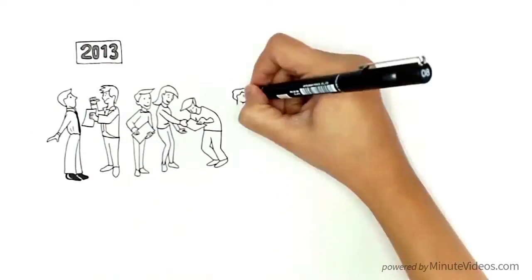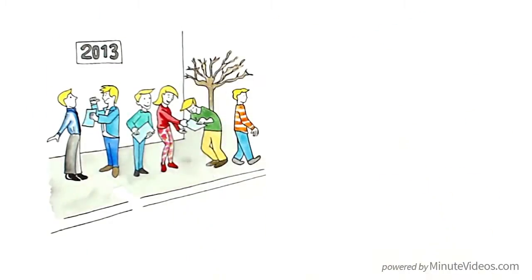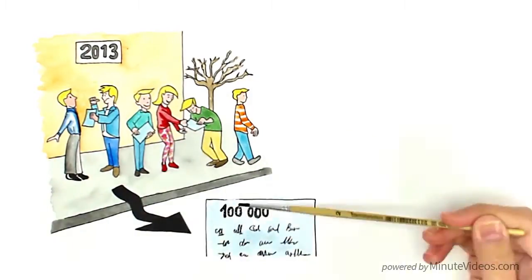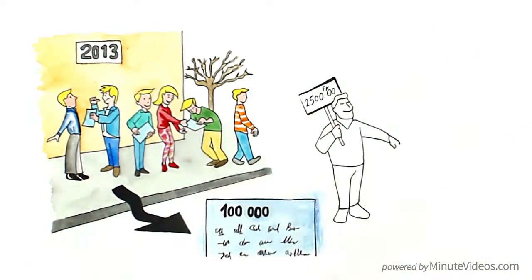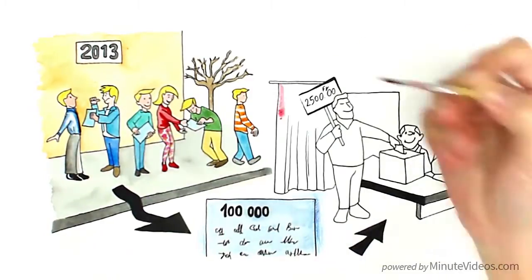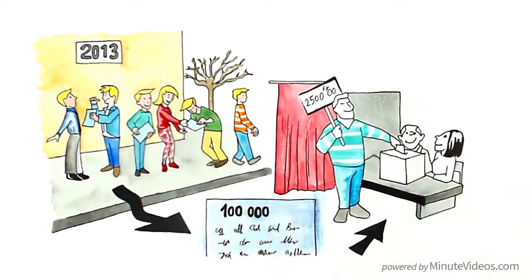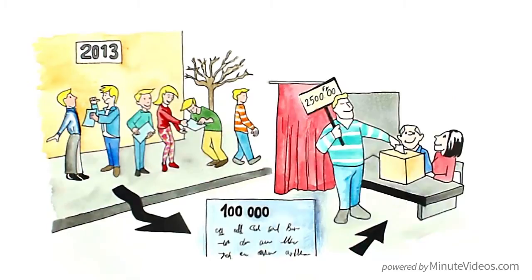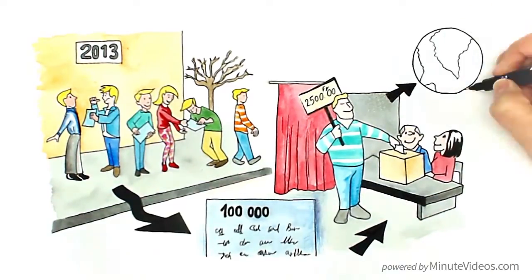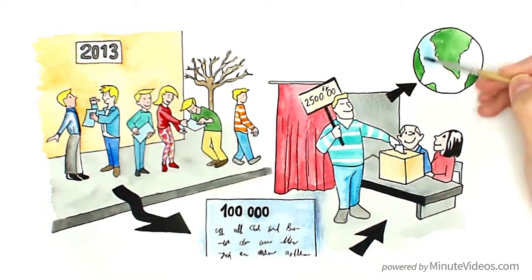In 2013, a Swiss group of basic income proponents collected more than 100,000 signatures, which is enough to start a referendum calling for an unconditional basic income of 2,500 Swiss francs per month. With enough support, the proposal will come to a public vote and may lead to proof the system for other countries.